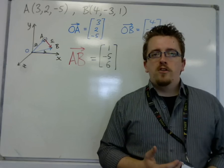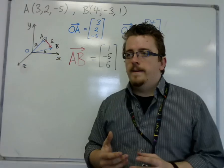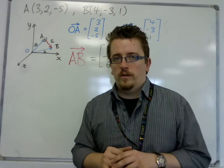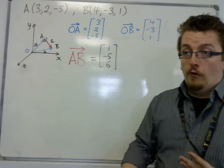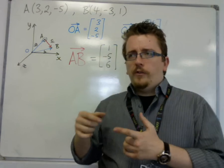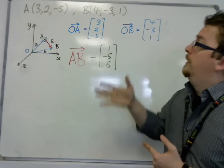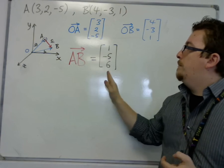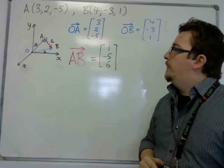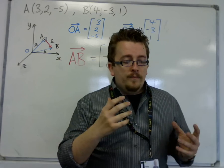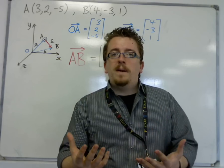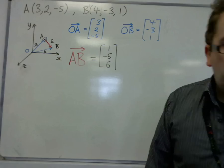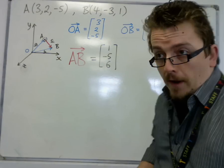Following on from the previous videos, we're now going to be looking at finding the equation of a line in vector form. I'm going to be using the same values that we've found before, with the same coordinates, and we've found the vector from A to B to be 1, minus 5, 6. This is information that you would need in order to write down the vector equation of a line.